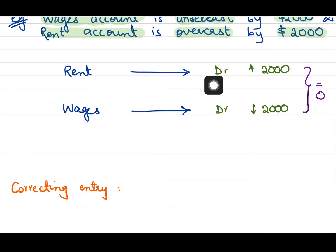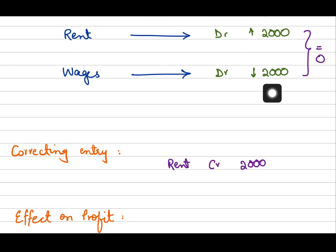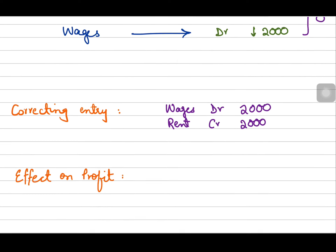To correct this error: the rent account is overstated, so to decrease an expense we credit rent by two thousand dollars. The wages account is understated, so to increase an expense we debit wages by two thousand dollars. The double entry is now balanced.